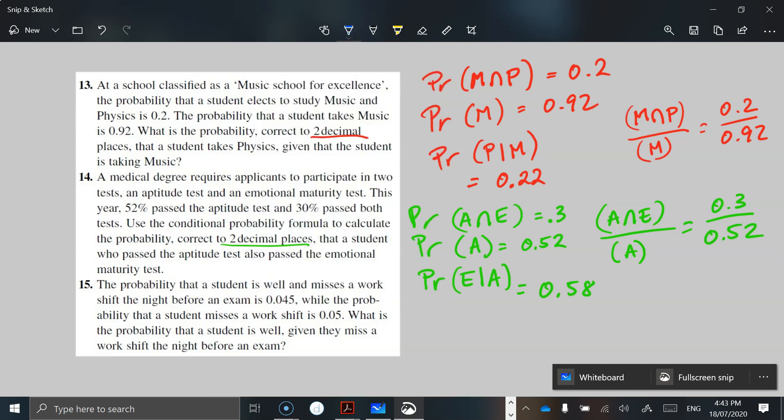Last one. Probability that a student is well and misses a work shift the night before the exam is 0.045. So probability is well and miss, so M for miss, is 0.045. And then, while the probability that the student misses a work shift, so M for missing, is 0.05.